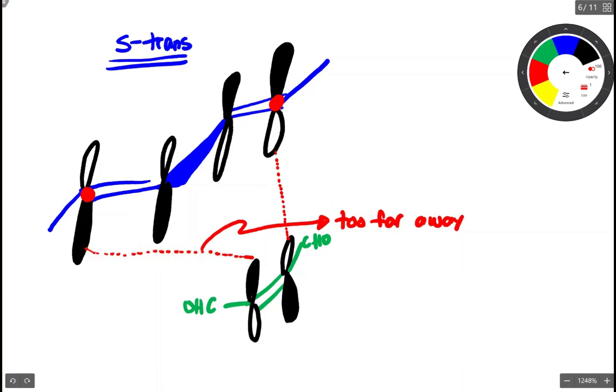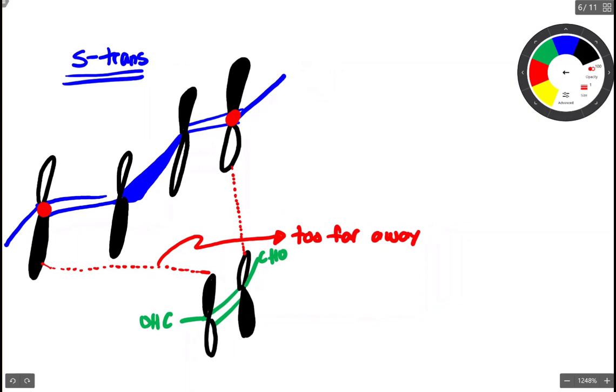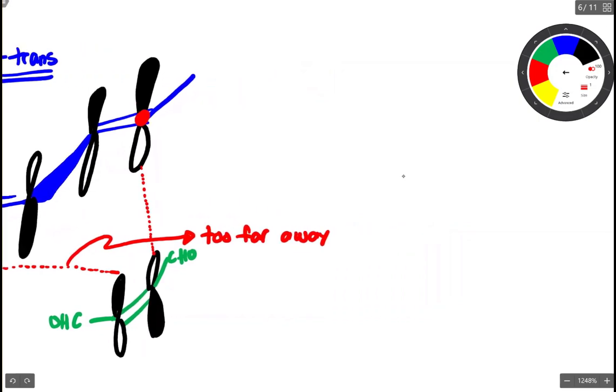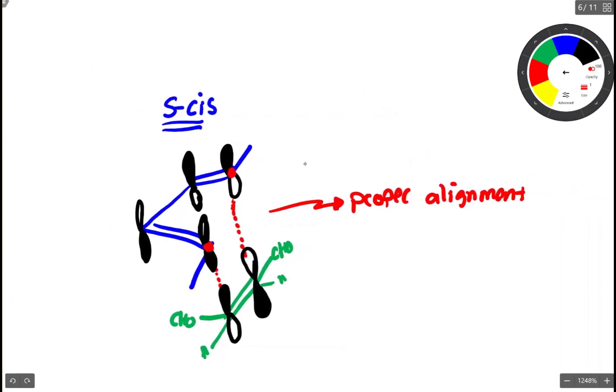So instead, we need to swing around this double bond to the S-cis orientation. When we do that, we have nice proximity for good constructive orbital overlap here.